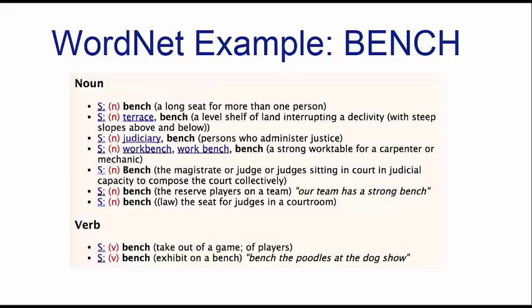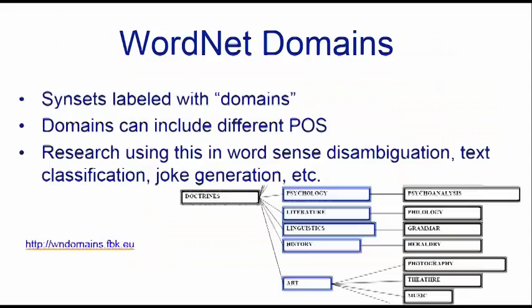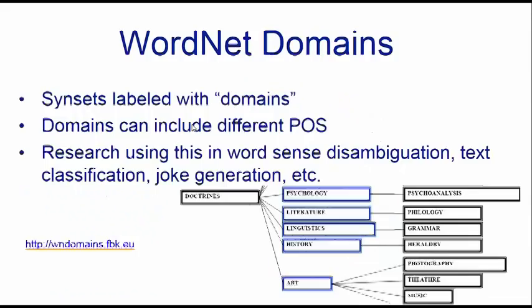There are resources layered over WordNet that are particularly useful for social science projects. One is WordNet Domain, an annotation on top of WordNet that indicates the domain where different words belong — so you can find words belonging to psychology, history, or art, with subdomains like photography, theater, and music. This is also a public resource.